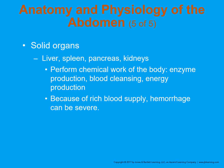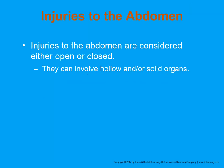The solid organs have an important job — they help clean the body systems, like washing machines. As such, they are very rich in blood supply, and when they're damaged they can bleed a lot. Like many injuries and most trauma, injuries to the abdomen are considered open or closed. We need to think about what's inside, what's underneath the skin.